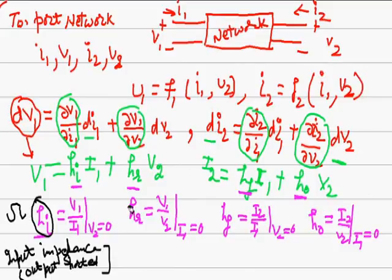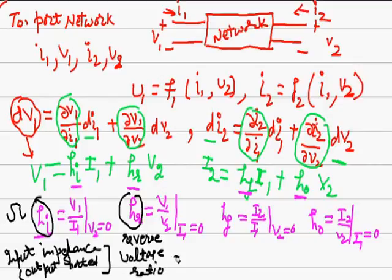HI is resistance or impedance; its unit will be ohm. And HR, which is reverse voltage ratio, is V1 over V2, and therefore it has no unit.